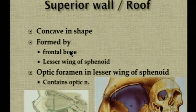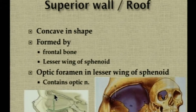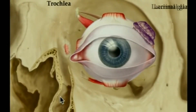The orbital roof is concave in shape and separates the orbital cavity from the anterior cranial fossa. The sagittal plane shows the roof is concave just behind the rim, then goes backwards and finally dips towards the apex. This shape is very important while reconstructing the orbital roof. The lesser wing of the sphenoid harbors the optic foramen containing the optic nerve. The roof also gives attachment to the trochlea nasally and the lacrimal gland anterolaterally.